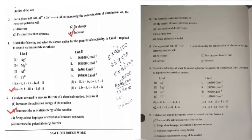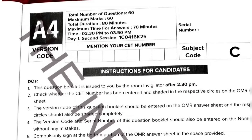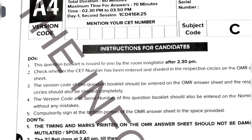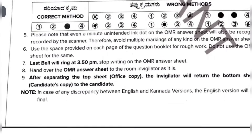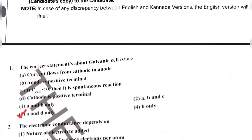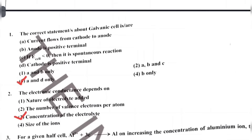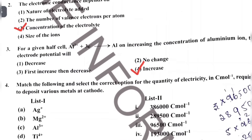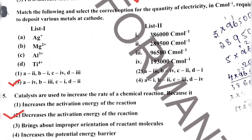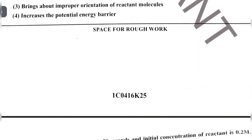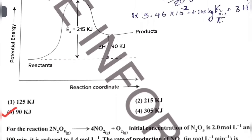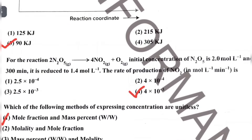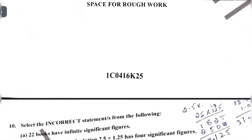This is the A4 version code of Chemistry. The total number of questions is 60. Question 1: option 3. Question 2: option 3. Question 3: option 4. Question 4: option 3. Question 5: option 2. Question 6: option 3. Question 7: option 3. Question 8: option 4. Question 9: option 1. Question 10: option 3.